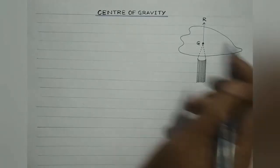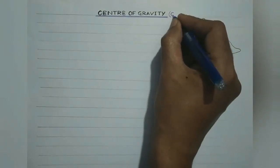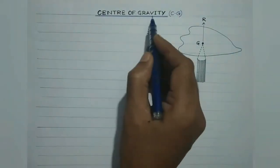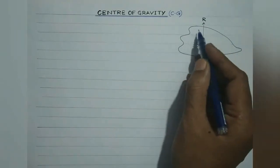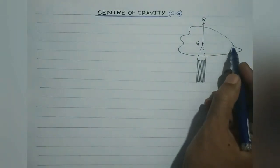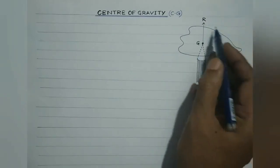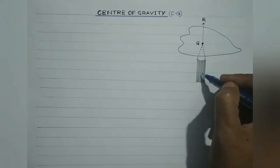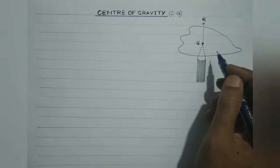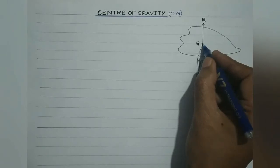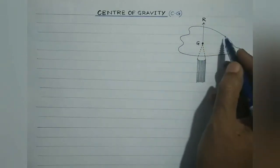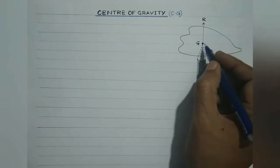Let us discuss the concept of center of gravity, written as CG. To understand it, consider an irregular-shaped cardboard and a narrow-tipped object like a pencil. By trial and error, we can locate a point G on the cardboard where it can be balanced on the tip of the pencil. The cardboard is balanced on the tip and remains horizontal at this position.